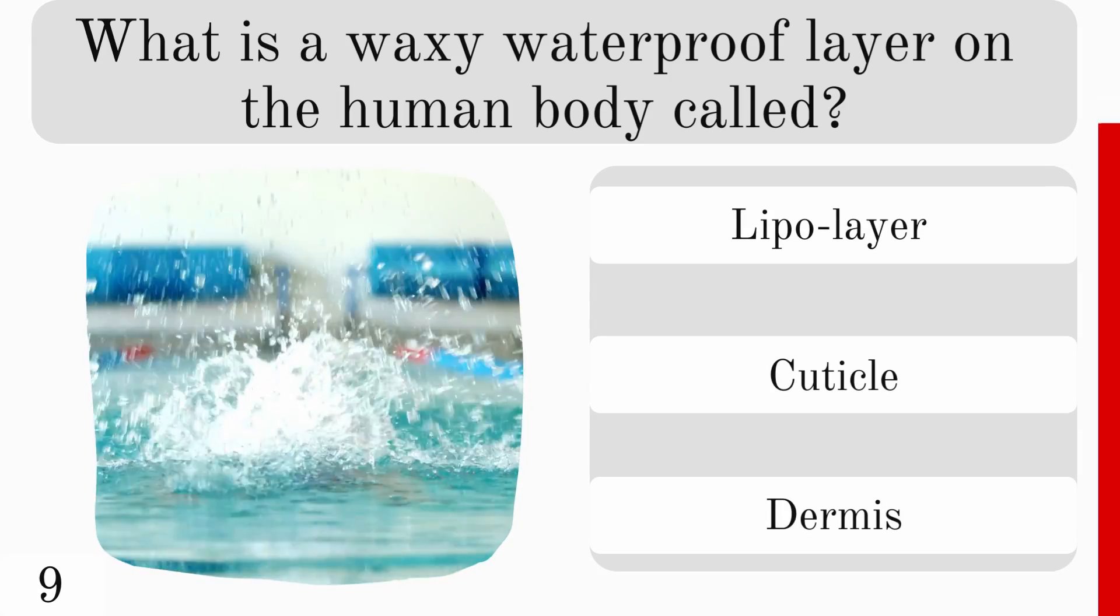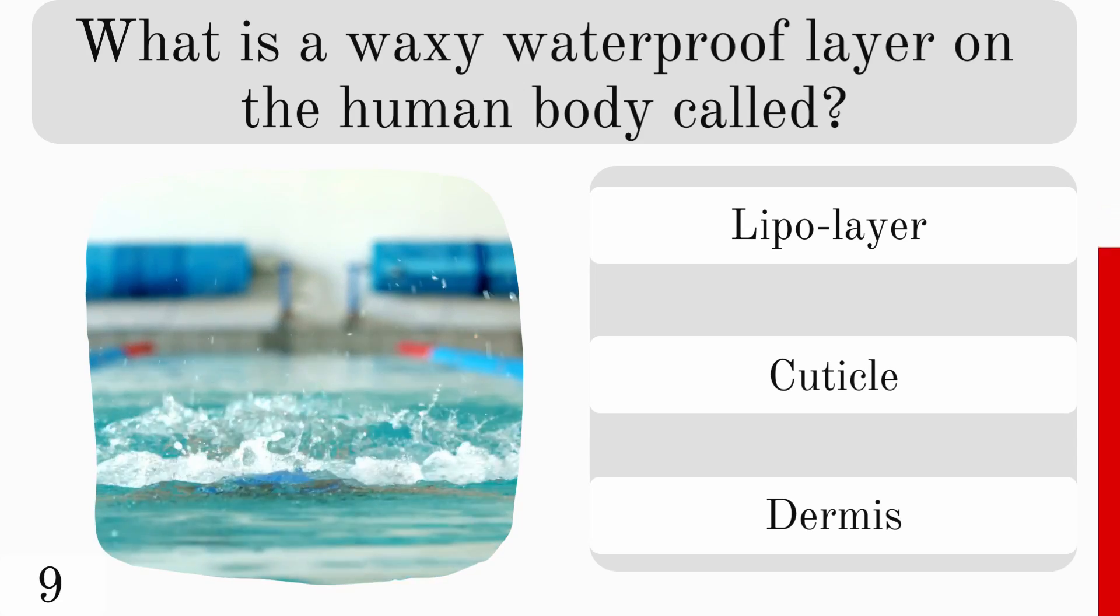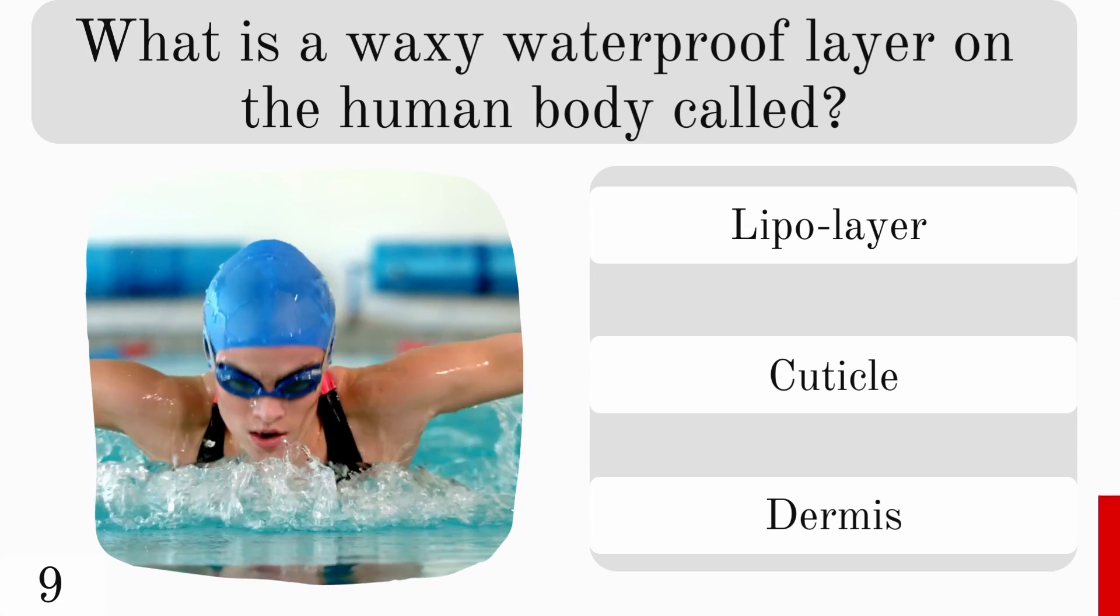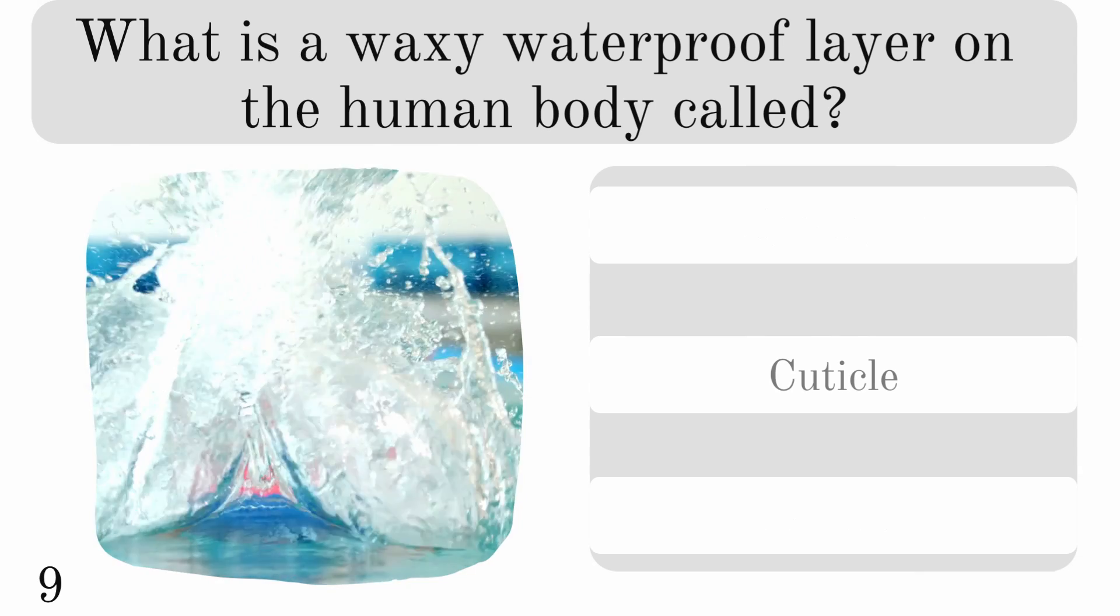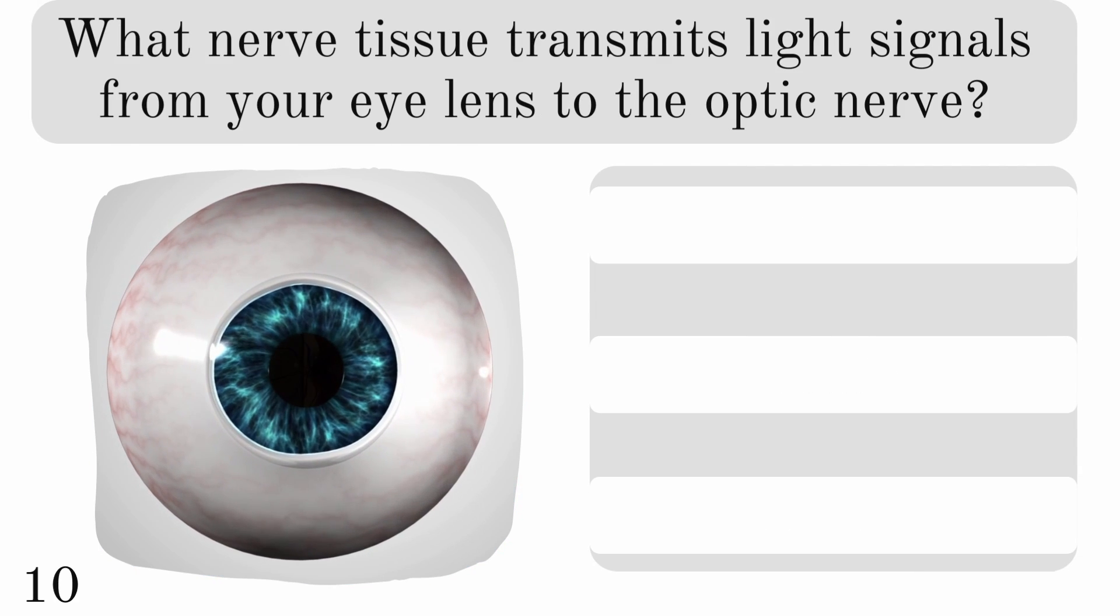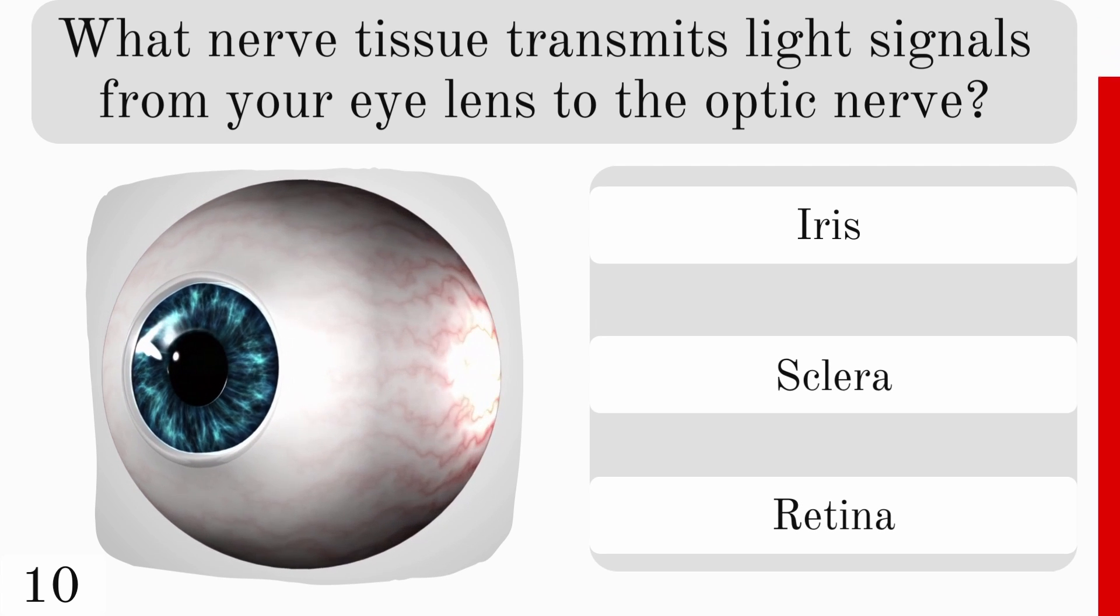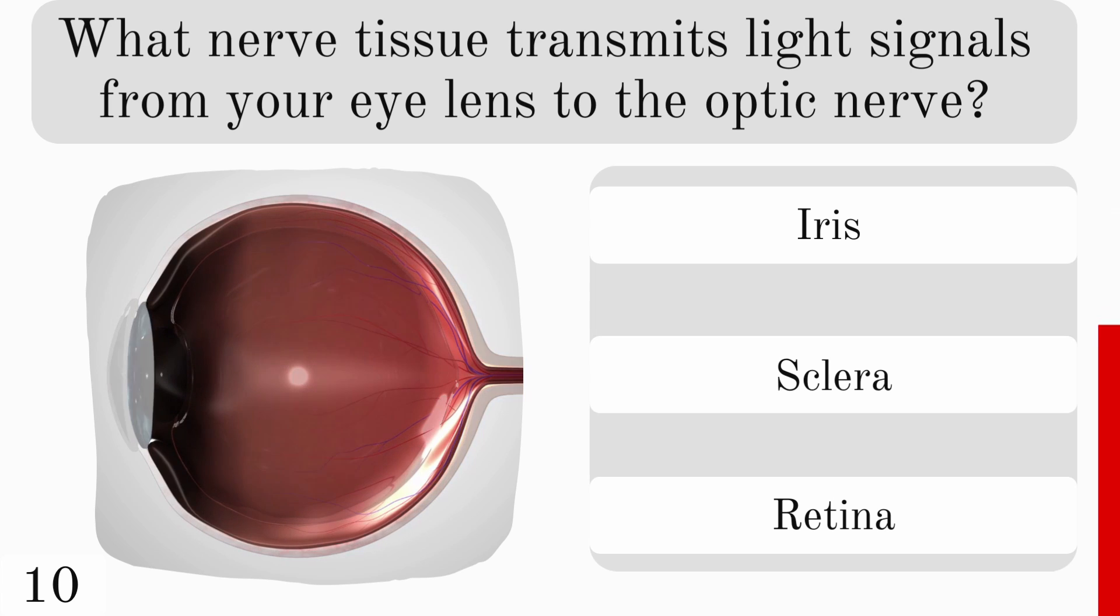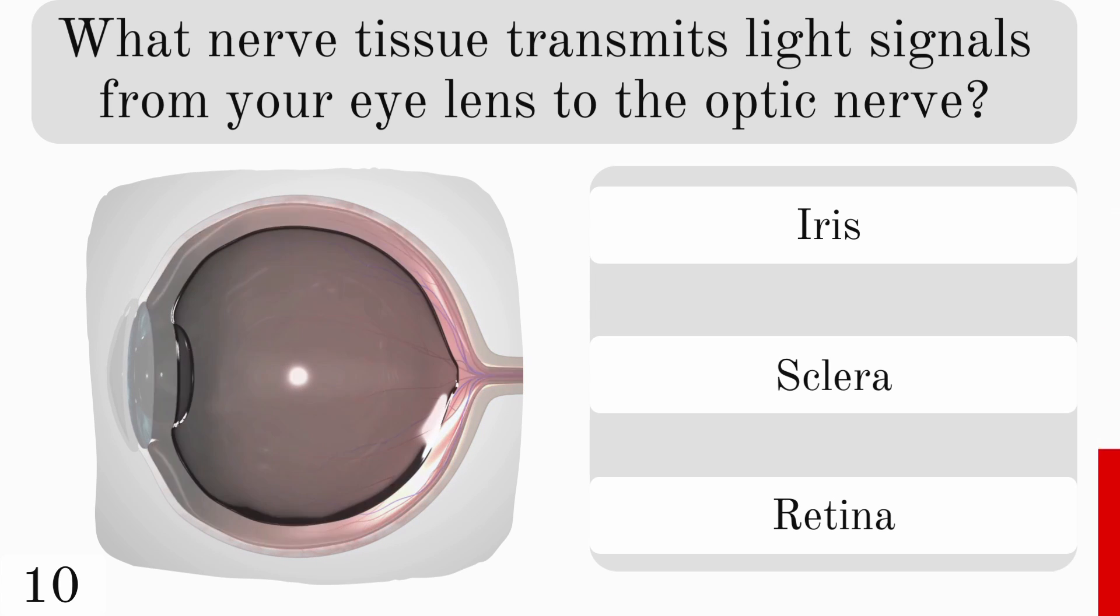What is the waxy waterproof layer on the human body called? Is it the lipo layer, cuticle, or dermis? And it is the cuticle. What nerve tissue transmits light signals from your eye lens to the optic nerve? The iris, sclera, or retina? And it is retina.